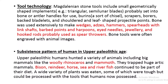Upper Paleolithic humans hunted a variety of animals, including large mammals like the woolly rhinoceros and mammoths, as well as bison, reindeer, and horse. They also trapped huge arctic mammals, and sea and river fish continued to be part of their diet. A wide variety of plants was also eaten, some of which were tough but could be processed with the tools humans now possessed.